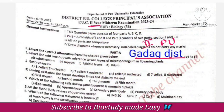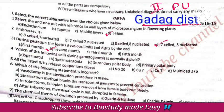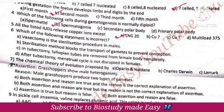First answer: Hylum. Second one: 7-celled, 8-nucleated. Third one: option B, second month. Fourth answer is option B, spermatogonia. Fifth one answer: LNG 20.